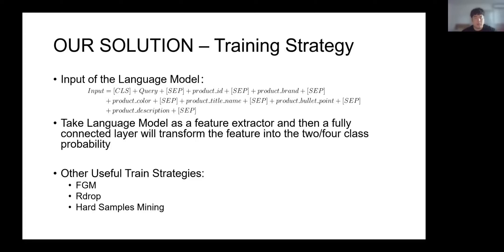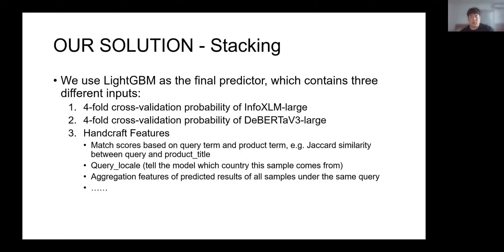The input of the language model is shown on this slide. We take the language model as a feature extractor, and then a fully connected layer transforms the features into two or four class probabilities. Other useful training strategies in our solution include FGM and hard sample mining. We use LightGBM as the final predictor, with three different inputs: four-fold cross-validation probabilities of InfoXLM-large, four-fold cross-validation probabilities of DeBERTa-V3-large, and handcrafted features including BM25 scores based on query and product terms, and query-level aggregation features of predicted results across all samples under the same query. All handcrafted features proved very powerful in our solution.